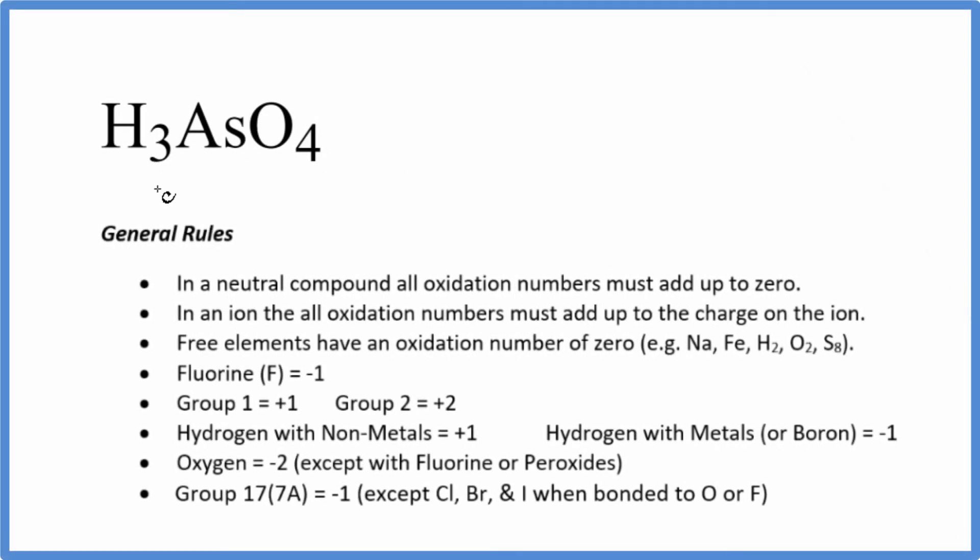In this video, we'll find the oxidation numbers for each element in H3AsO4. The first thing we should note is there's no negative or positive after this, so it's going to be a neutral compound. All the oxidation numbers are going to add up to zero.